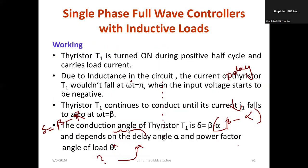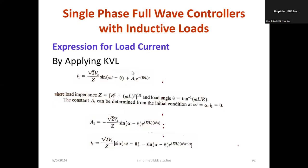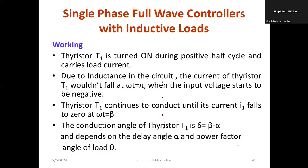The conduction angle of thyristor T1 equals beta minus alpha and depends on the delay angle alpha and the power factor of the load theta. Since we are using an inductive load, the power factor is lagging — the current is lagging, which is called lagging power factor. Now, we can easily apply KVL. By applying KVL — Kirchhoff's voltage law — first you apply KVL to the closed loop, and later from that you can calculate the current I1.